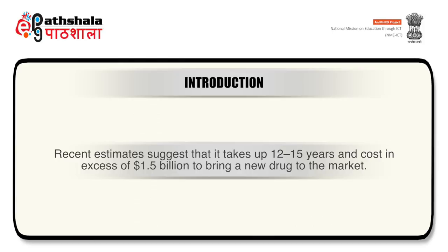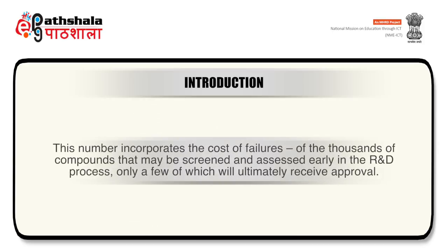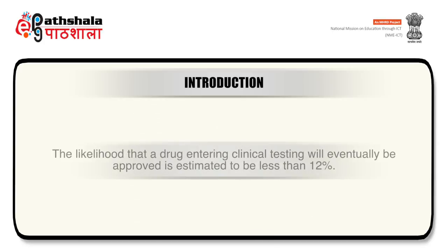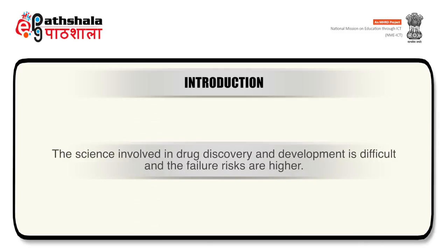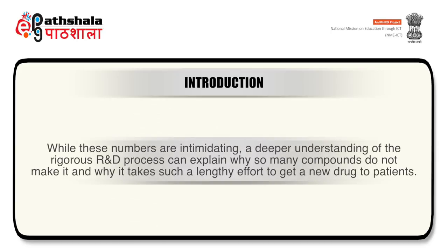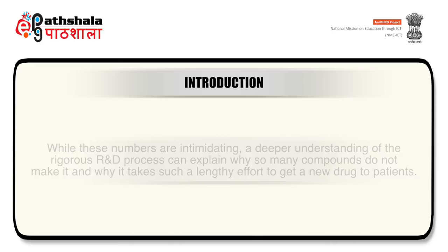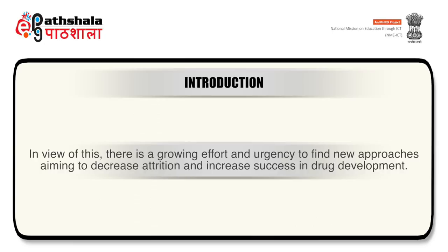Recent estimates suggest that it takes up to 12 to 15 years and costs in excess of $1.5 billion to bring a new drug to the market. This number incorporates the cost of failures of the thousands of compounds that may be screened and assessed early in the R&D process, only a few of which will ultimately receive approval. The likelihood that a drug entering clinical testing will eventually be approved is estimated to be less than 12 percent. While these numbers are intimidating, a deeper understanding of the rigorous R&D process can explain why so many compounds do not make it and why it takes such a lengthy effort. There is a growing effort and urgency to find new approaches aiming to decrease attrition and increase success in drug development.